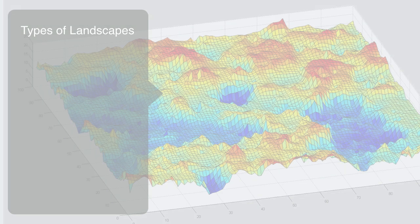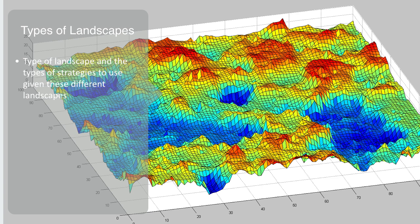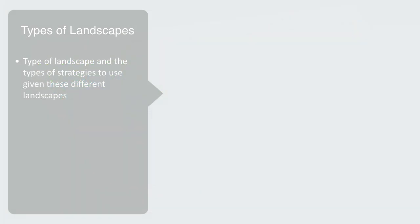Now that we understand what a fitness landscape model is, there are two main things we need to consider. Firstly, the type of landscape we are dealing with, and secondly, the types of strategies we might use given these different landscapes. Firstly, to talk about the types of landscapes, what we will call their topology, there are a number of different parameters that will define the overall topology.